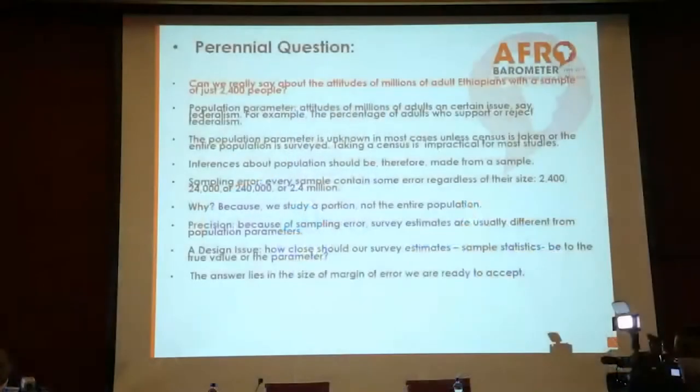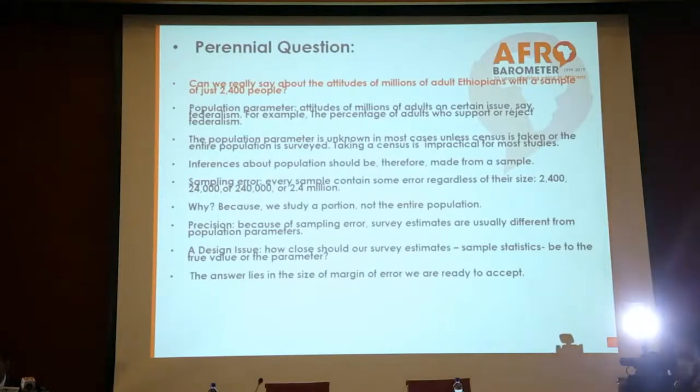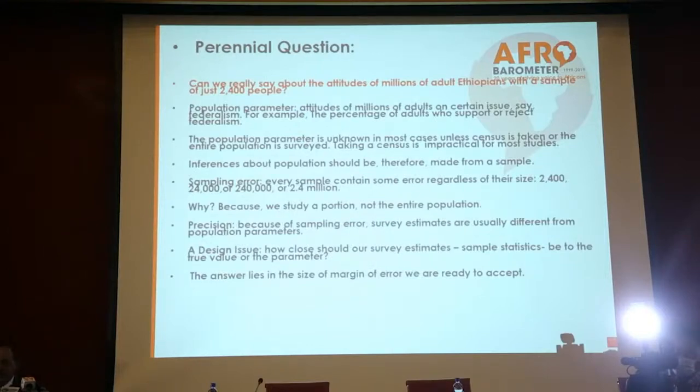But there is this perennial question that is often asked when a sample survey of this type is presented: can we really say something about the attitudes of millions of adult Ethiopians with a sample of just 2,400 people? The answer is a resounding yes, and I will explain why, in terms of certain concepts. The first is population parameter — by that we mean the attitudes of millions of adults on a certain issue, say, a given percentage of adults who support or reject federalism. Do we know this number? We don't.